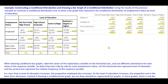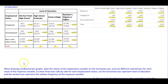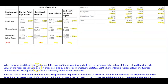Now what we want to do is create a bar graph of this information. When drawing conditional bar graphs, you want to label the values of the explanatory variable on the horizontal axis and use different colored bars for each value of the response variable. We draw three bars side by side for each employment status, letting the horizontal axis represent the level of education and the vertical axis represent the relative frequency of the response variable.